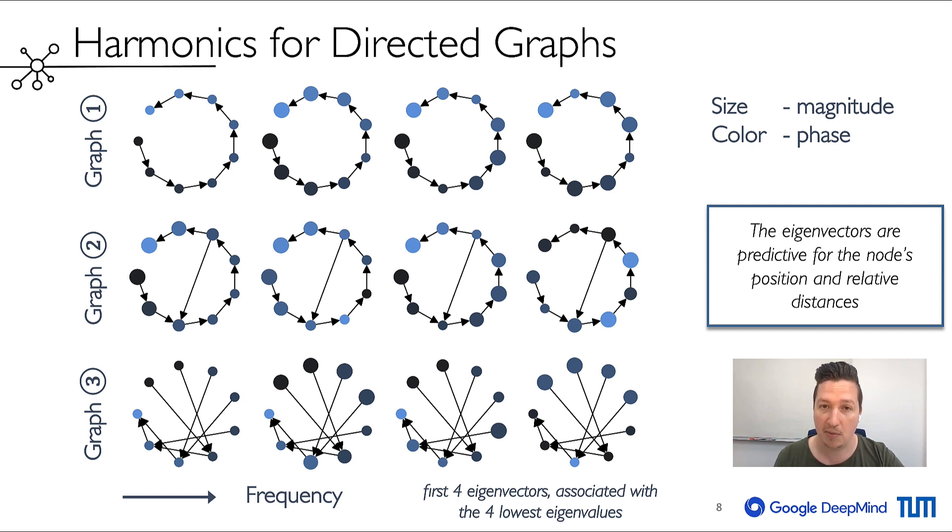Importantly, the now complex-valued eigenvectors are again well-behaved and can be used as positional encodings. Here we show the first four eigenvectors, where the size encodes the magnitude and the color the phase.